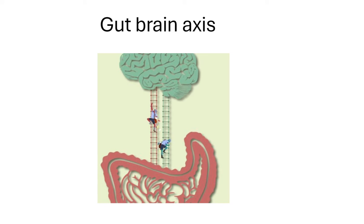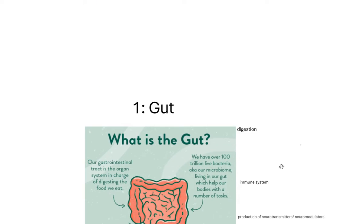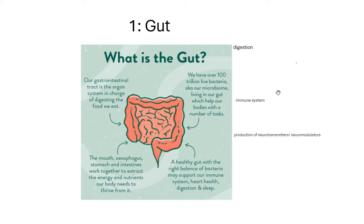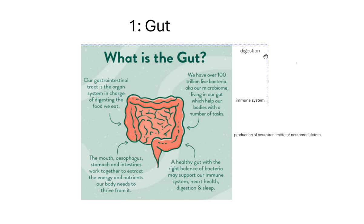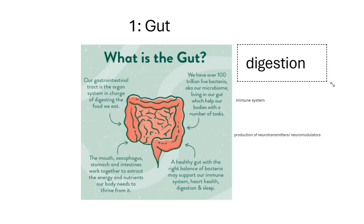A good starting point for getting ahead around the GBA is to talk about the role of the four major components of the GBA. I'm going to start at the bottom with the gut. When we talk about the gut, we're talking about the GIT, the gastrointestinal tract, which is made up of a bunch of different organs that we know plays a key role in digestion.